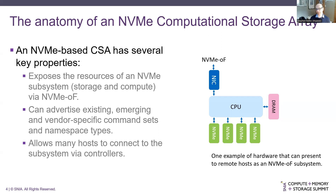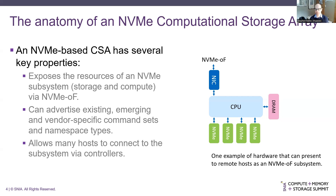In our example, we have a very classical NVMe over Fabrics kind of hardware set. We have a high performance networking card, a CPU, some DRAM, and a bunch of NVMe solid state drives. Some of the key properties of a computational storage array is that we expose a bunch of resources — typically storage and soon to be compute — via NVMe over Fabrics.